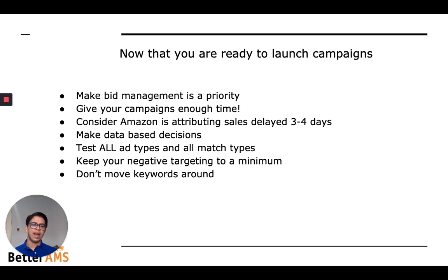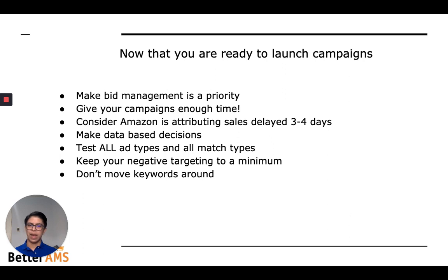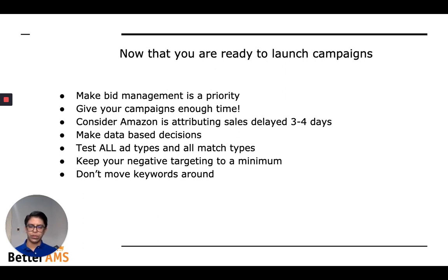You want to consider that Amazon attribution is delayed by three to four days. Amazon has been clear in terms of what the attribution windows are — for sponsored products it's seven days, for sponsored brands it's 14 days. So give them some time. Don't be scared unless a keyword is doing something crazy — it would make sense to stop the bid, but if not, try to be patient. Make data-based decisions. Don't pause a bid just because it's been one or two weeks and it's not performing the way you want. Try to wait for those attribution periods to be over before analyzing how campaigns are performing.